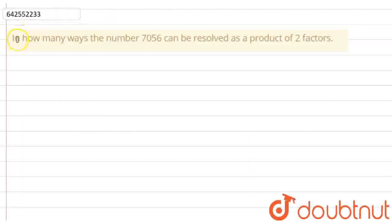So the question given is: in how many ways can the number 7056 be resolved as a product of two factors? Let's solve this. The number given is 7056. Let's find out the factors of this first.